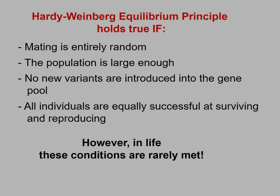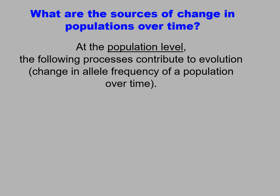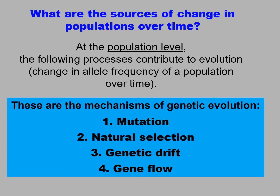However, in life, these conditions are rarely met. So what are the sources of change in populations over time? The mechanisms of genetic evolution are mutation, natural selection, genetic drift, and gene flow.